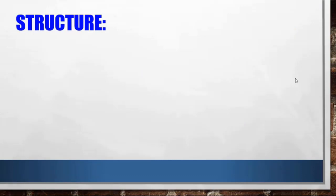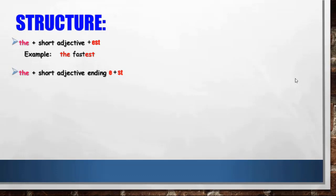Now we have some cases for adding '-est'. Number one: we add '-est' to a short adjective, like 'the fastest'. Number two: if the short adjective already ends with 'e', we do not add another 'e' — we just add '-st'. So for 'late', we say 'the latest'.